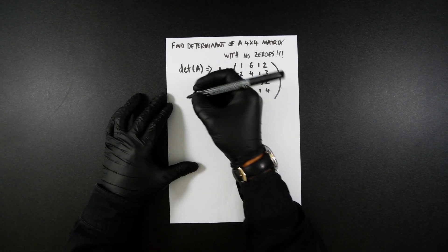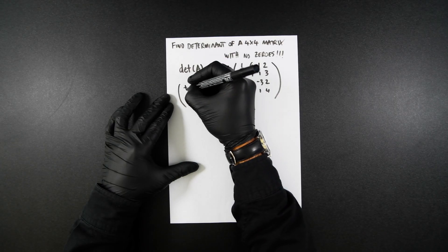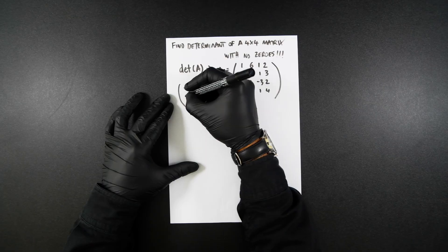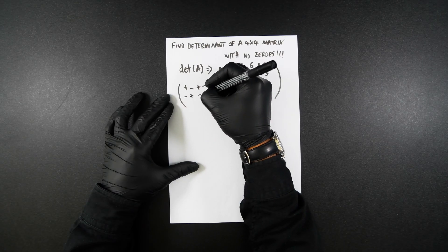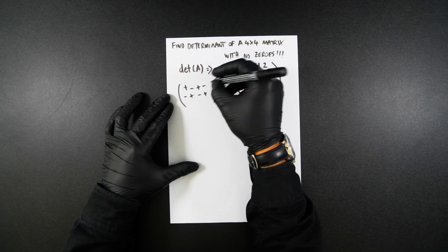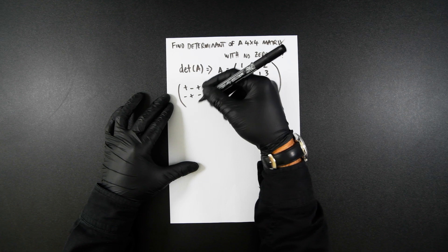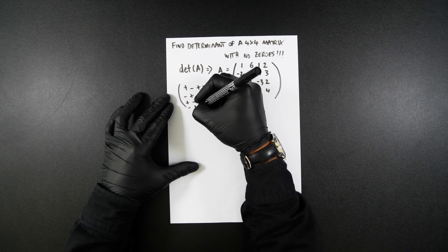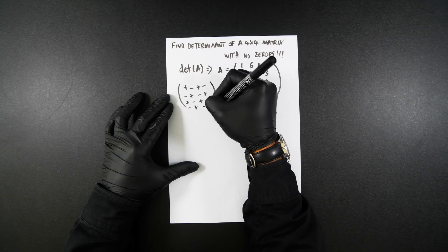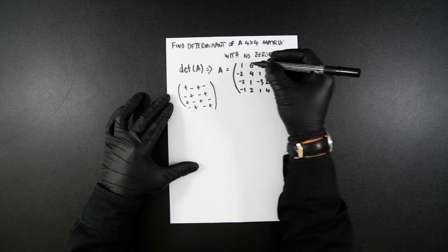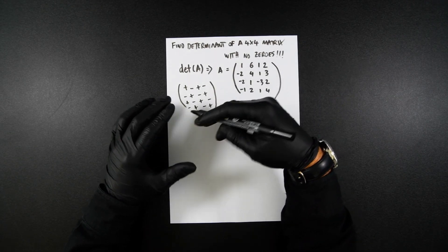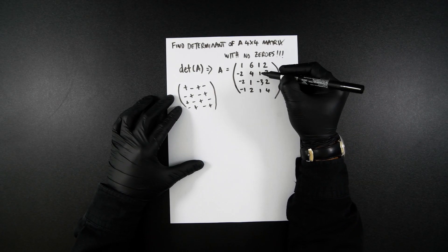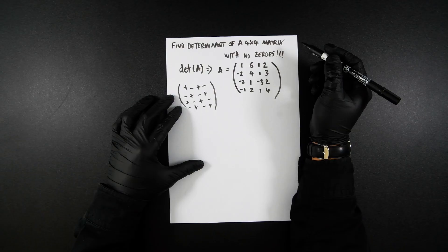So the first thing to write down is we assign the positive or negative values for a matrix, which always exchange: plus, minus, plus, minus, minus, plus, minus, plus. So these are each of the values that are assigned when we are expanding them out. And you've got A, B, C, D, E, F, G, H, I, J, K, and so on.